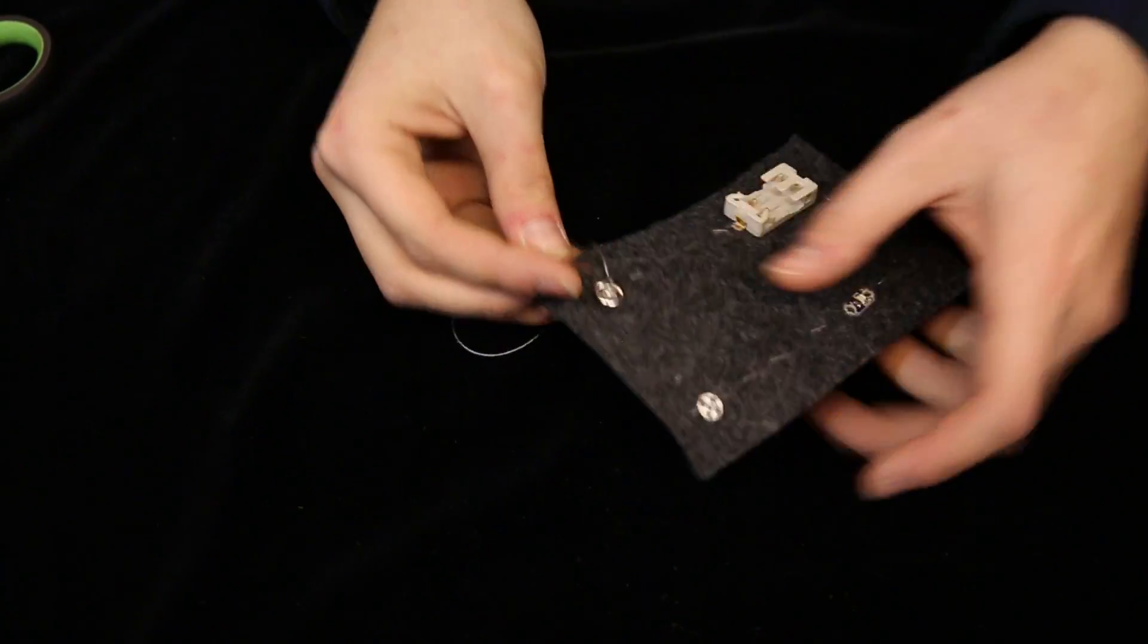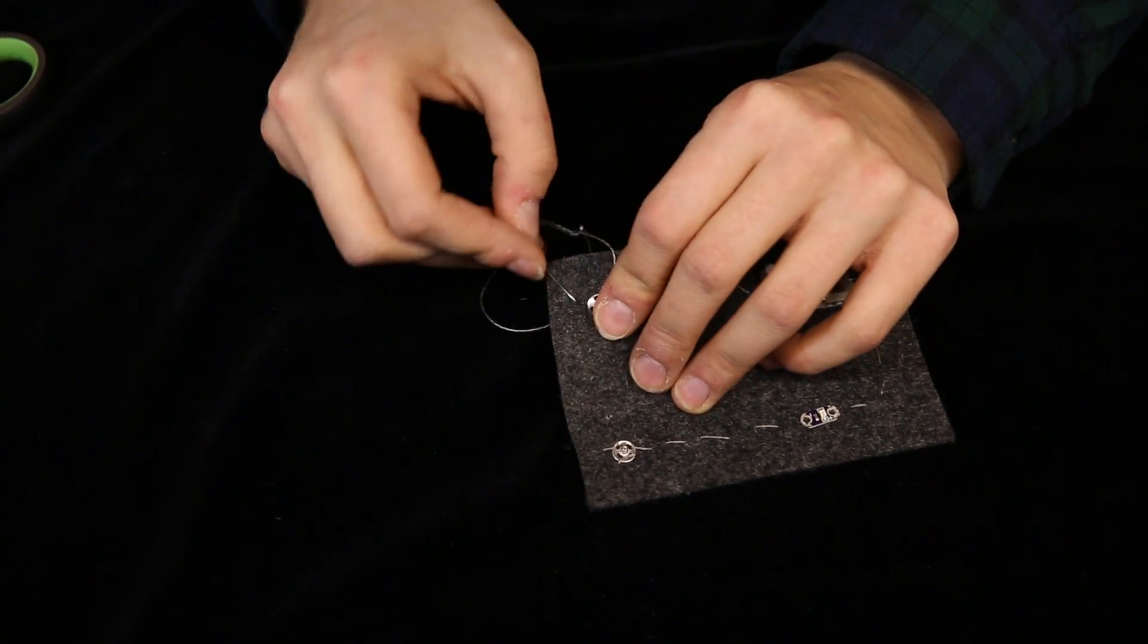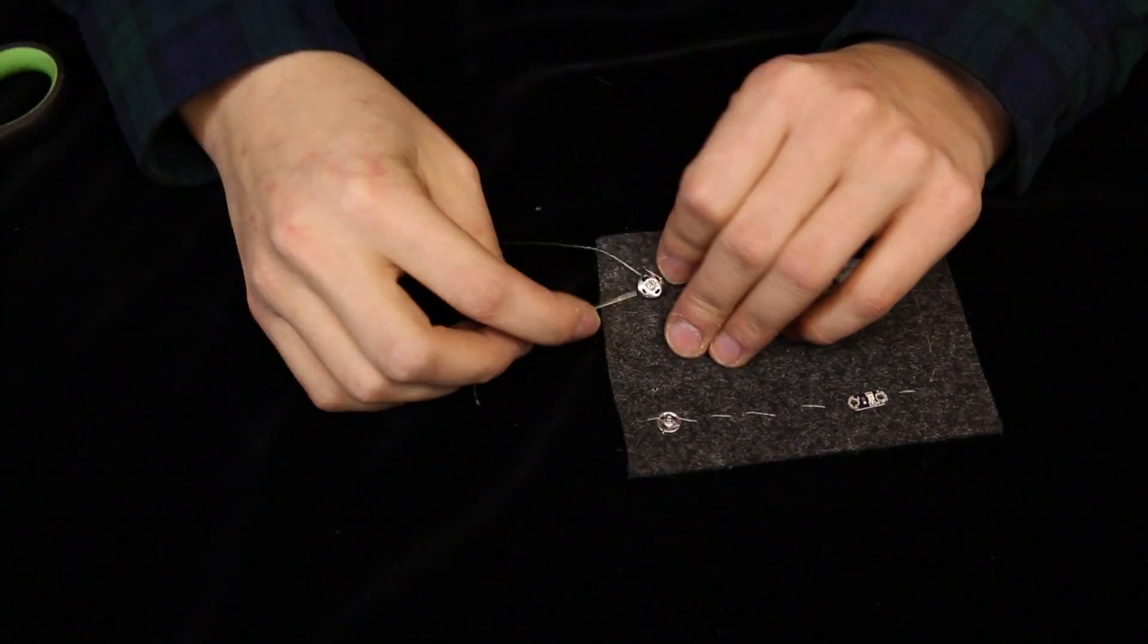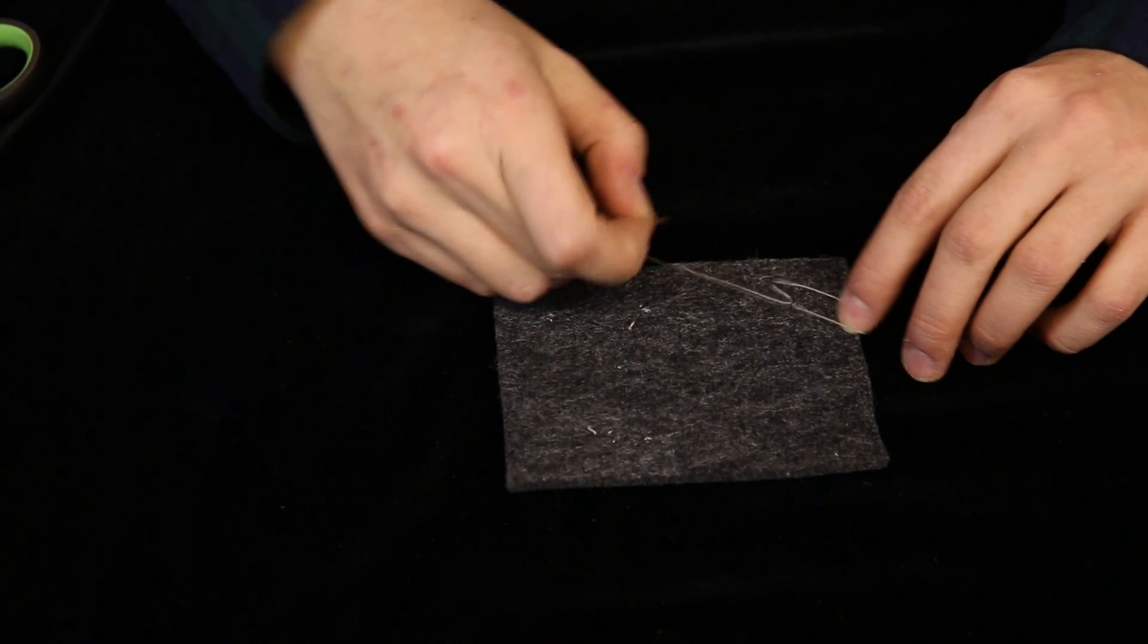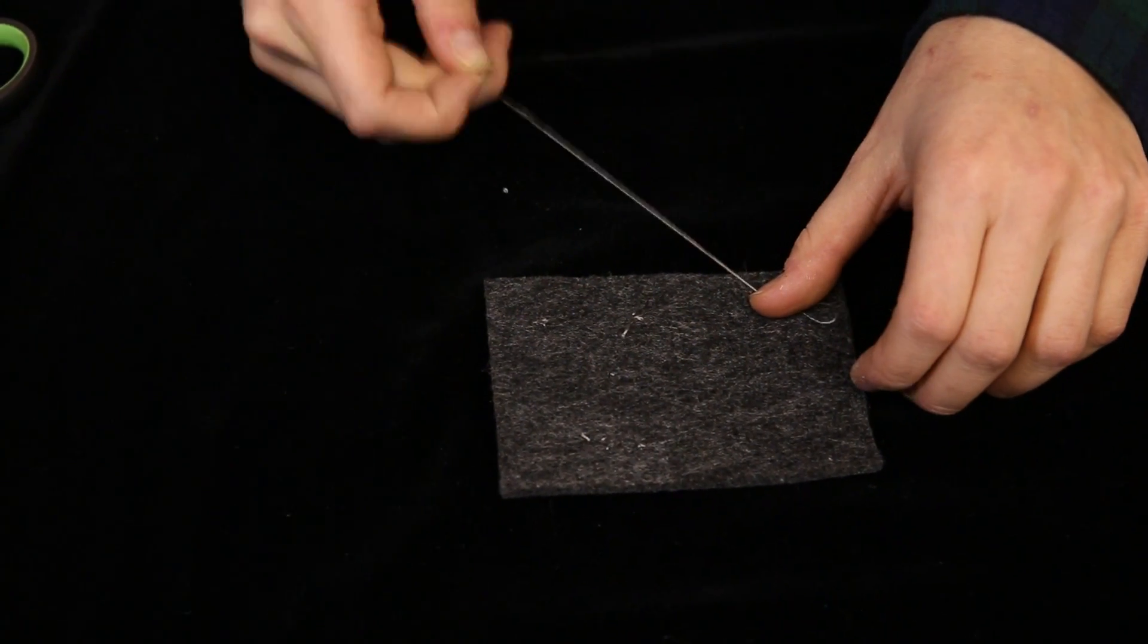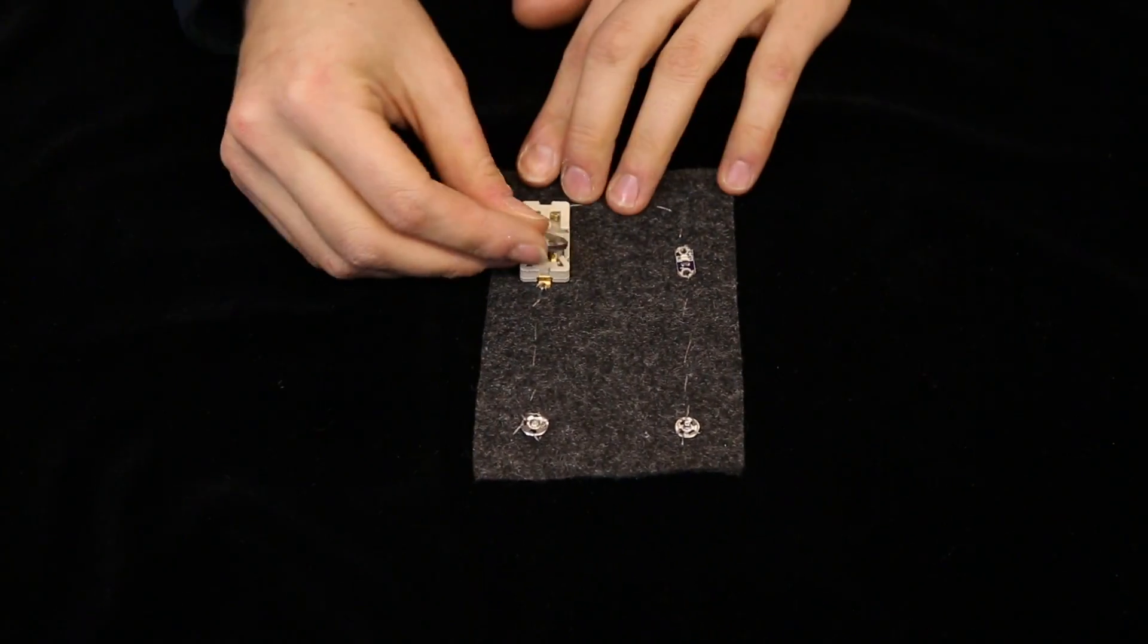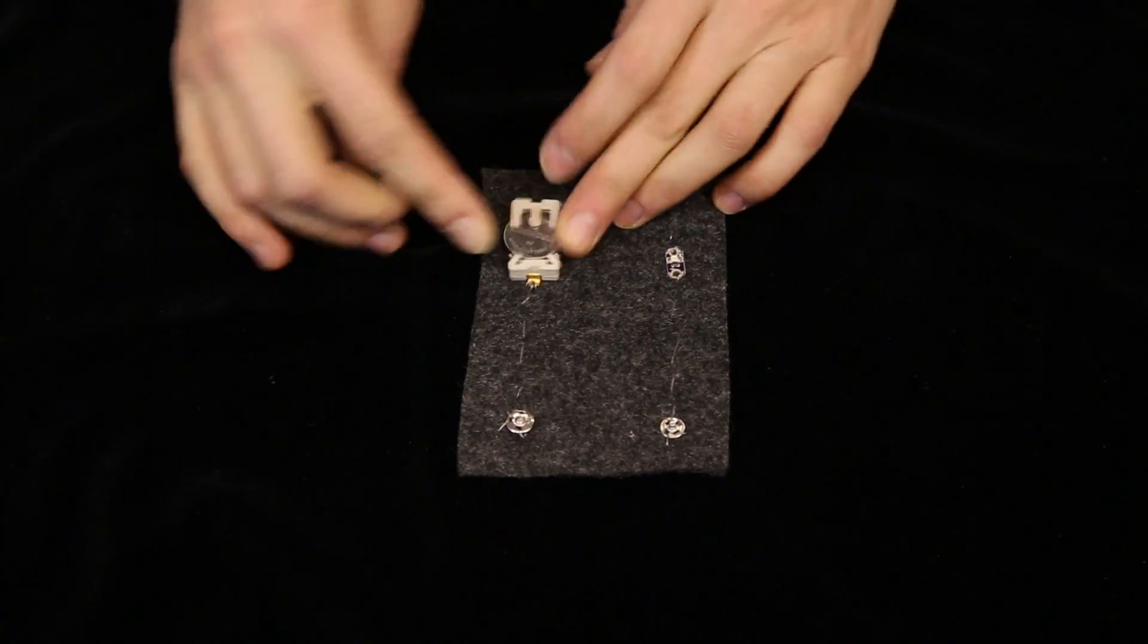Place the second side of the snap at least an inch away from the other and sew it down to the felt. With the same piece of thread, connect it to the negative lead of the coin cell battery holder. Put a battery in and snap! Let there be life.